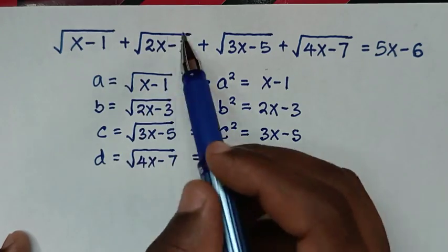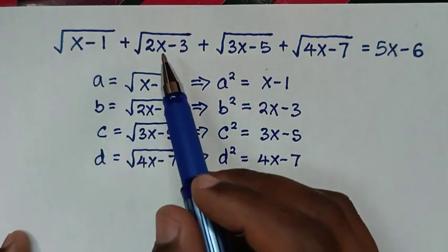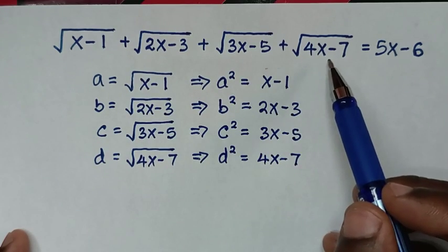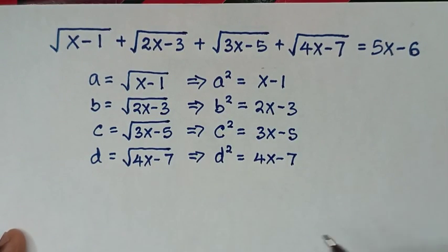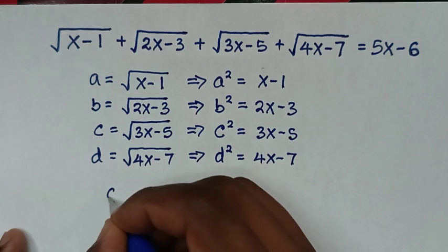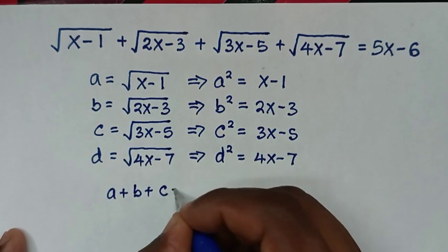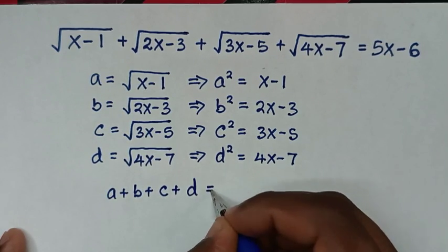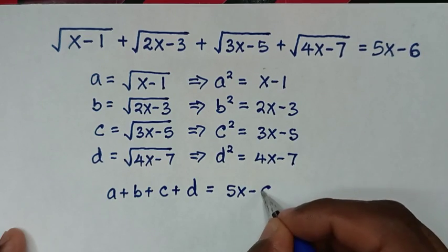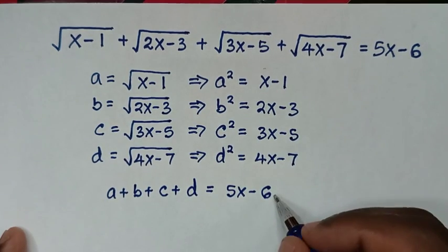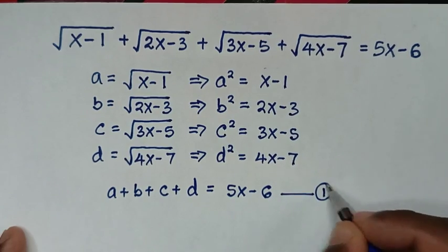Because we let these expressions equal a, b, c, and d, it follows that a plus b plus c plus d equals 5x minus 6. We write this as equation 1.